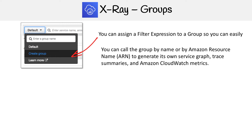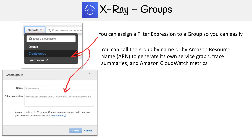Right beside where the filter expression is, you can drop down and hit Create Group. From there, you're going to name that group, and you can put an ARN in there. Then you just provide your filter expression.